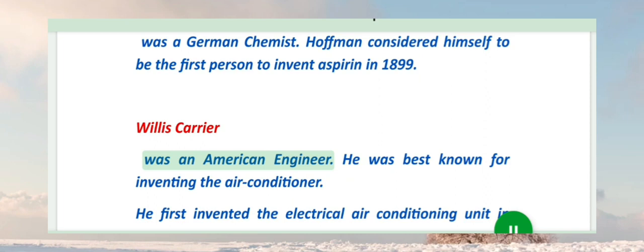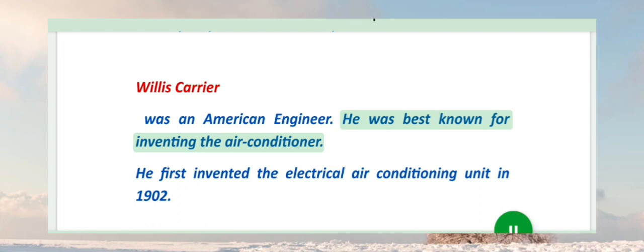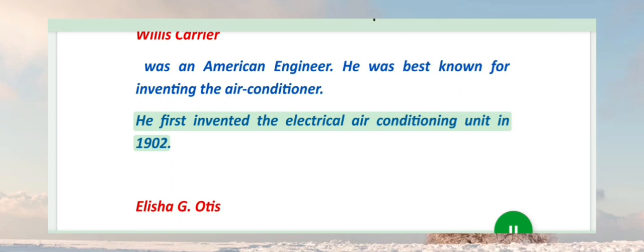Willis Carrier was an American engineer. He was best known for inventing the air conditioner. He first invented the electrical air conditioning unit in 1902.